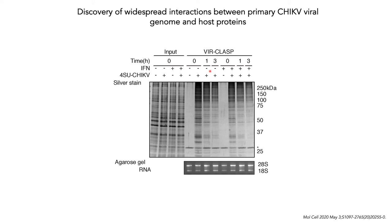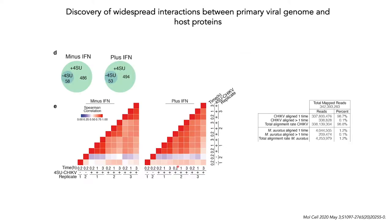Shown here is the silver stain of our results. In lanes infected with unlabeled chikungunya — the minus 4-thiouridine ChikV lanes — we did not find any significant enrichment of any protein. The asterisk represents a band for benzonase, which was used to degrade the RNA prior to loading on the protein gel. Our approach pulls down total RNA, which is why we could use ribosomal RNA from the cells to visualize the consistency of our recovered material. We next subjected the recovered cross-linked proteins to HPLC mass spec analysis.